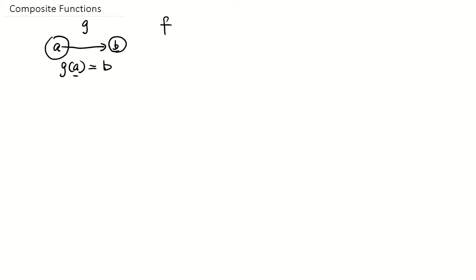This is the input, this is the output. And let's say f is a function that maps b to c. So for function f, if b is the input, c will be the output. So f of b would equal c.